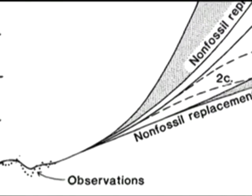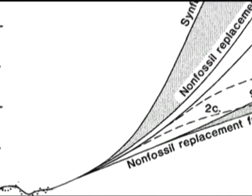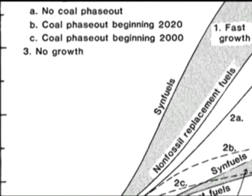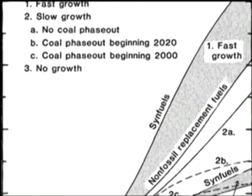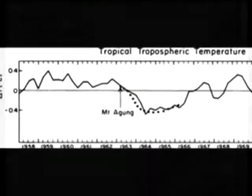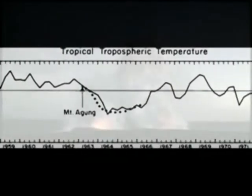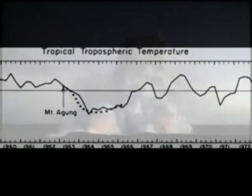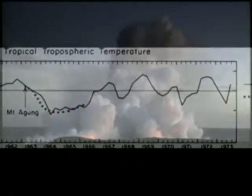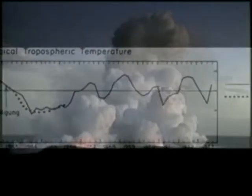In the 1970s, Dr. James Hansen and colleagues at NASA built a simple climate model to simulate how changes in the atmosphere cause Earth's average temperature to change over time. Hansen's early climate model showed that both human and natural activities could force Earth's climate to change.